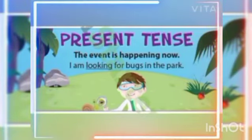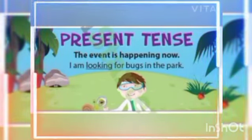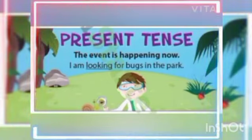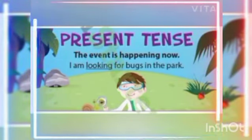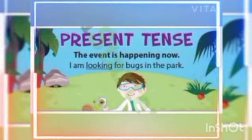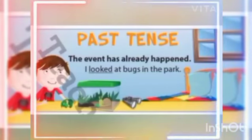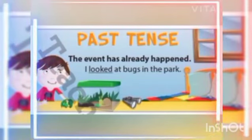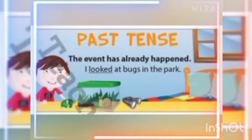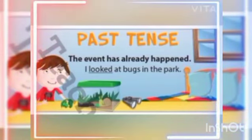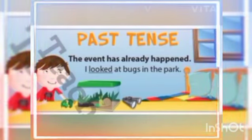Present tense tells us about the event which is happening now. Right now, something is happening — that is the present tense. Like, I am looking for bugs in the park. Whatever you are doing right now, that is the present tense.